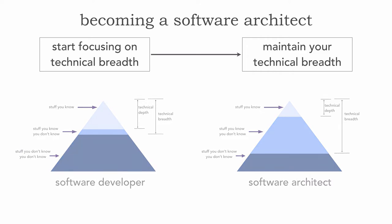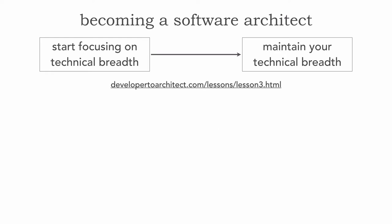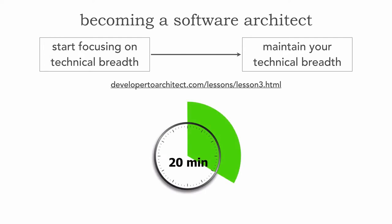In Lesson 3, I talked about how to gain this technical breadth. I introduced what I call the 20-minute rule: 20 minutes a day in the morning while having coffee or tea, before checking email — and that's an important part, before checking email — spend 20 minutes focusing on your technical breadth. This cadence allows you to really start gaining this breadth without a lot of sacrifices.